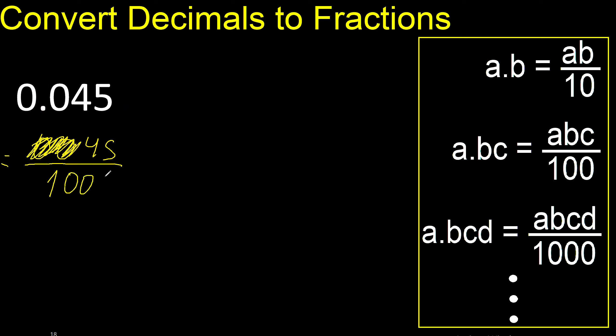1, 2, 3 — can be simplified because they can be divided by the same number. Divided by 5: the numerator divided by 5 is 9, the denominator divided by 5 is 200.